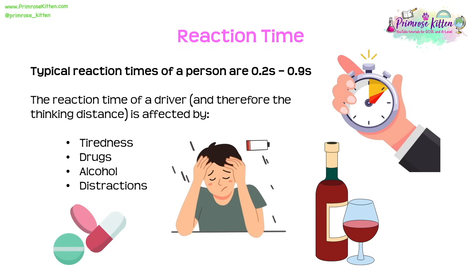The typical reaction time of a person is between 0.2 and 0.9 seconds. There are several factors that can affect reaction time and therefore thinking distance: tiredness increases reaction time, as does the use of drugs, the use of alcohol, and the presence of distractions such as loud music.